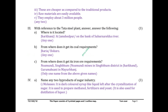With reference to the Tata Steel plant: Where is it located? At Jamshedpur, on the bank of Subarnarekha River. From where does it get its coal requirements? Jharia or Bokaro. From where does it get its iron ore requirements? Noamundi mines and Singhbhum district in Jharkhand, and Gurumahisani in Mayurbhanj.